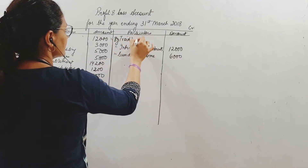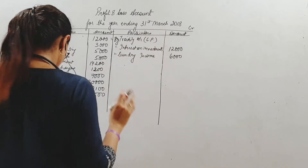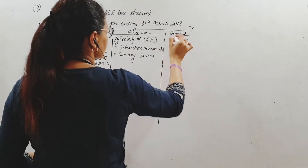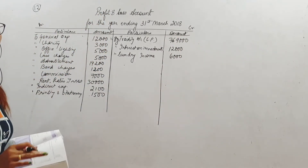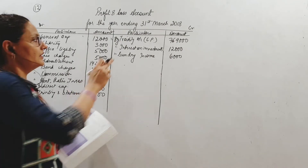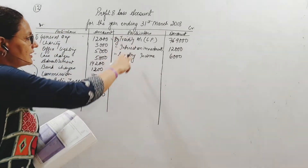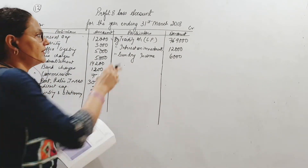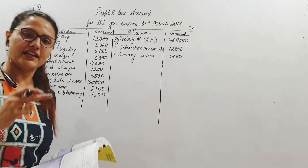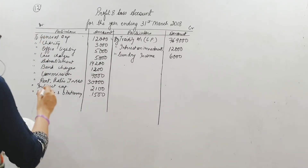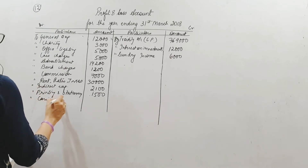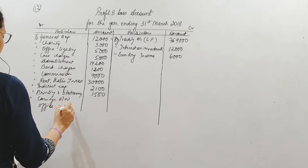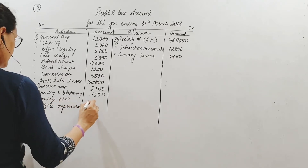Write 'by trading account' — gross profit brought down. When children just write 'gross profit' they lose marks unnecessarily, because there is no account called 'gross profit.' We are naming accounts here. The gross profit is coming from the trading account, so name the trading account. Then carriage outward, office expenses — all indirect expenses come to the debit side.